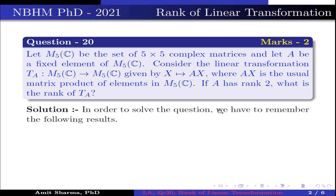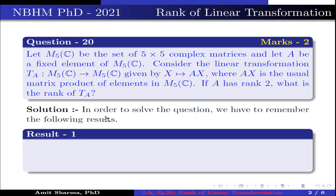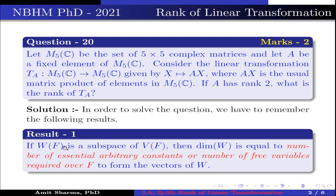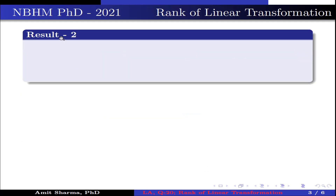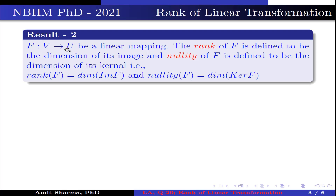In order to solve the question, we have to remember the following results. Result number 1: if W over F is a subspace of V over F, then dimension of W is equal to number of potential arbitrary constants, or number of free variables required over F to form the vectors of W. Result number 2: F from V to U be a linear mapping. The rank of F is defined to be the dimension of its image, and nullity of F is defined to be the dimension of its kernel.